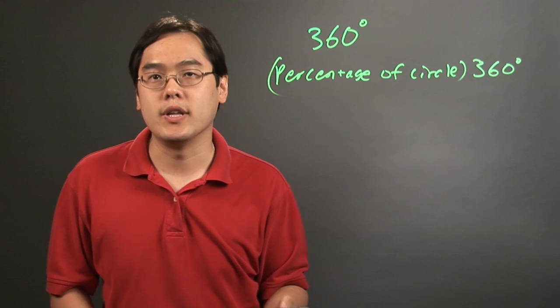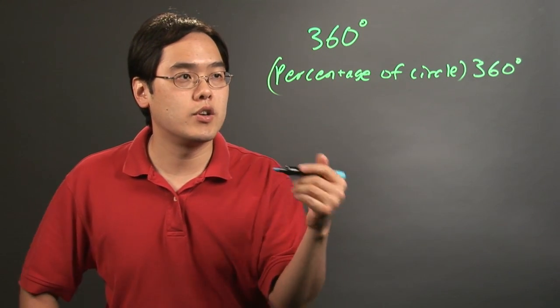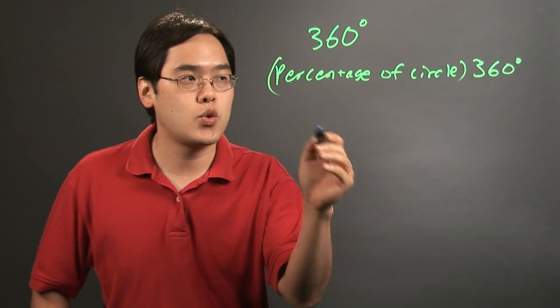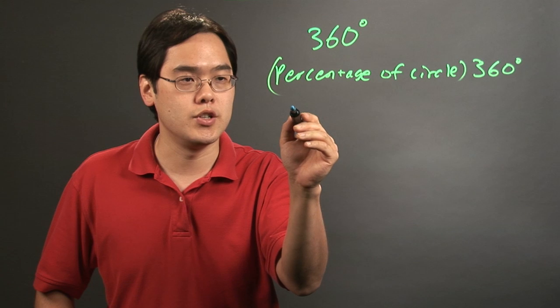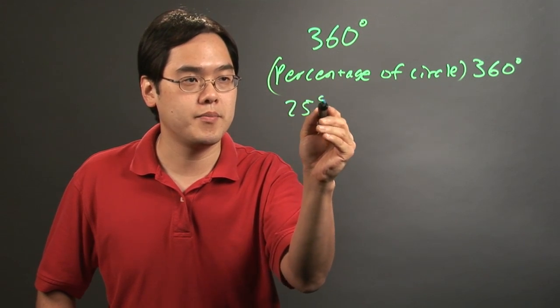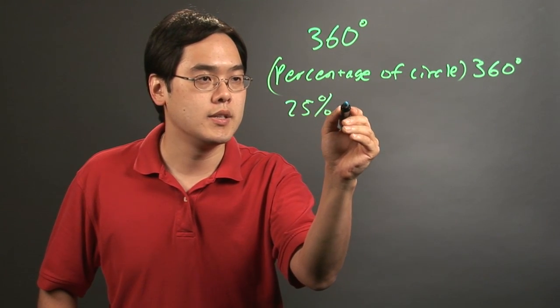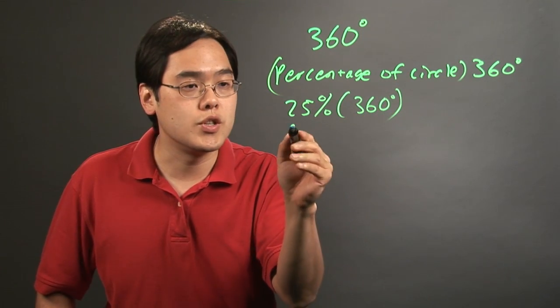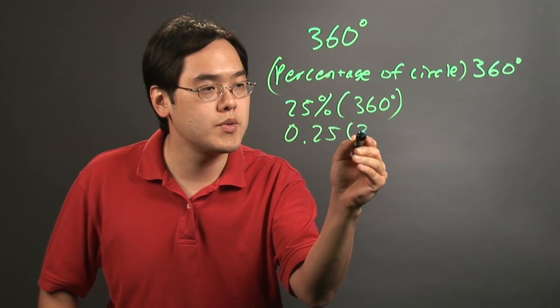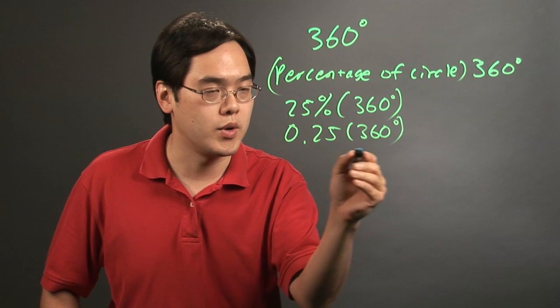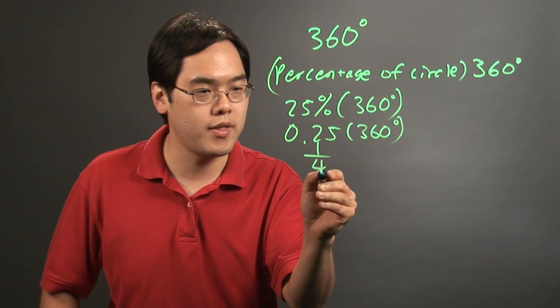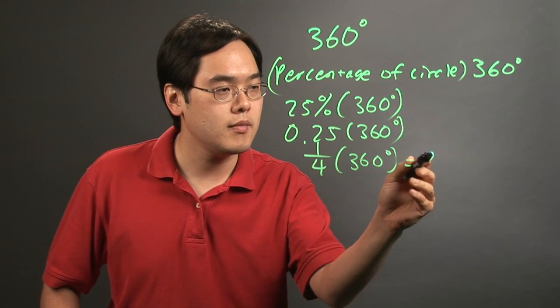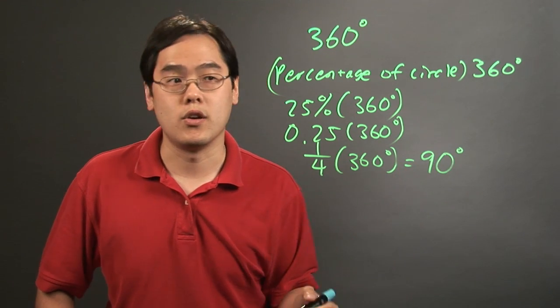So for example, if you know that you want to look for, let's just say, how many degrees 25% of the circle is, what you can do is do 25% and then times 360. You can do 0.25 times 360 if you want to convert it that way, or you can even do 1/4 of 360 and you'll get 90 degrees here.